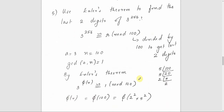Next question: use Euler's theorem to find the last two digits of 3 raised to 256. Finding the last two digits means finding the value mod 100. Here A equals 3 and N equals 100. GCD of 3 and 100 is equal to 1. By Euler's theorem, 3 raised to φ(N) is congruent to 1 mod 100.